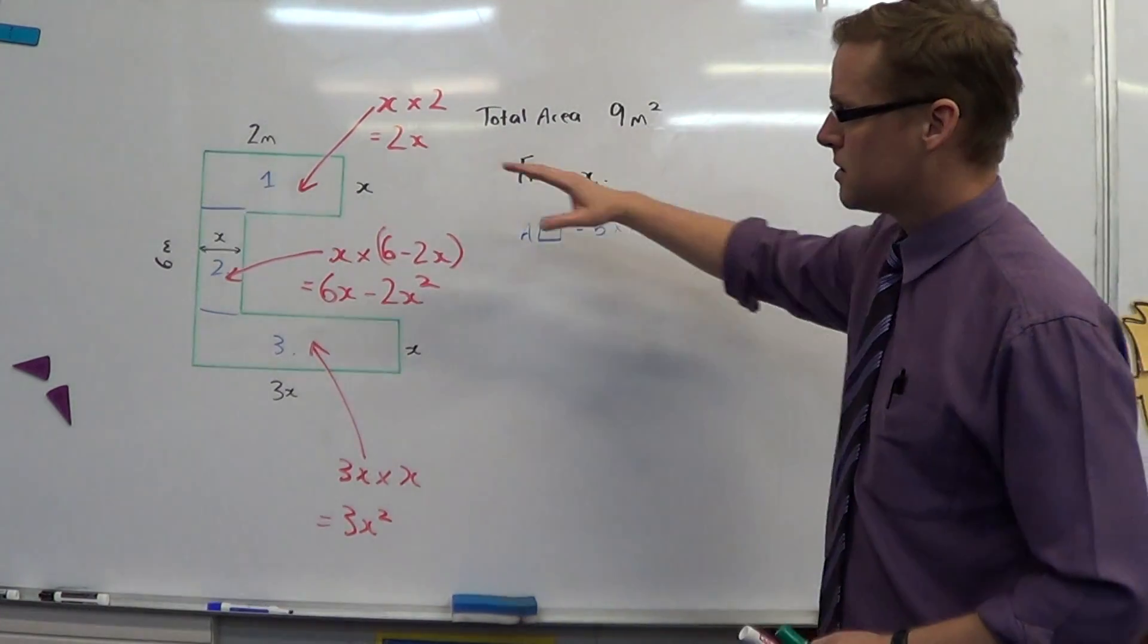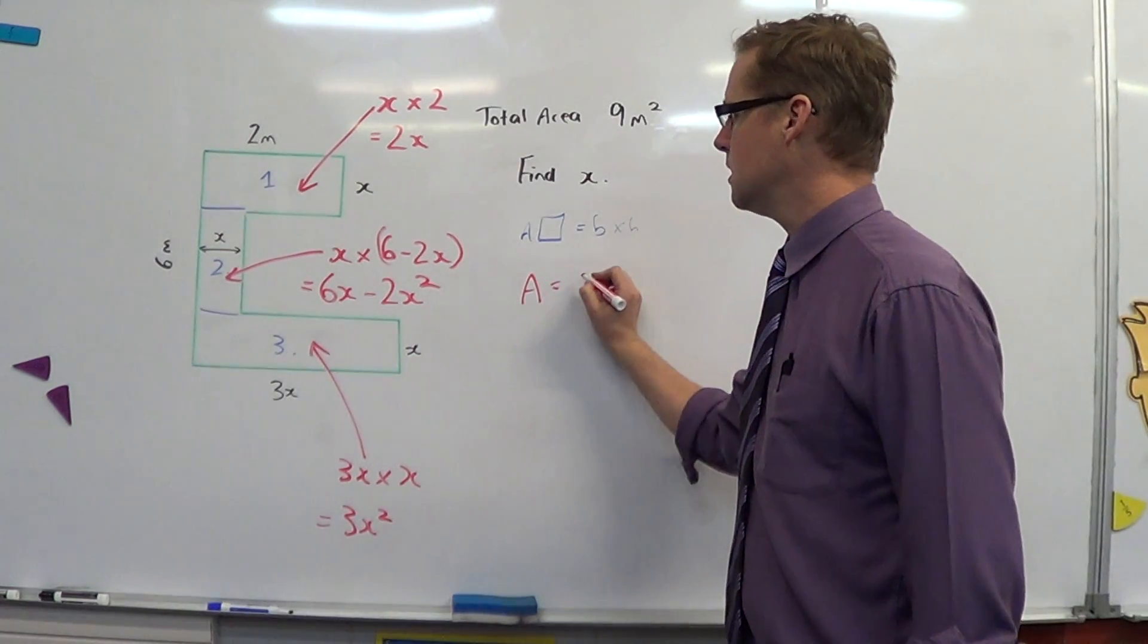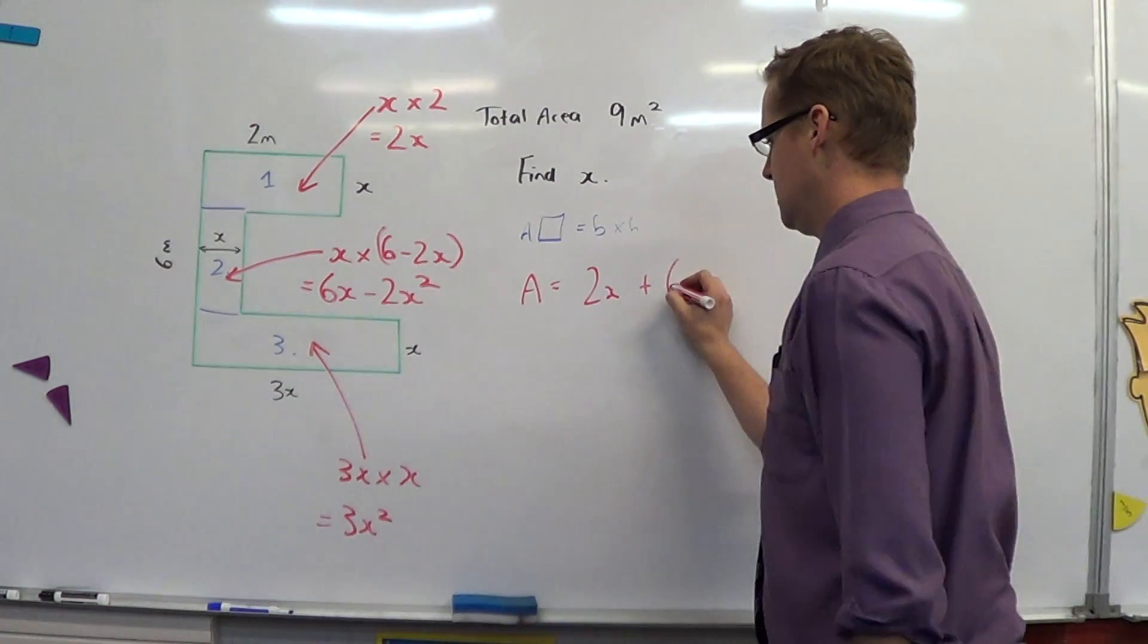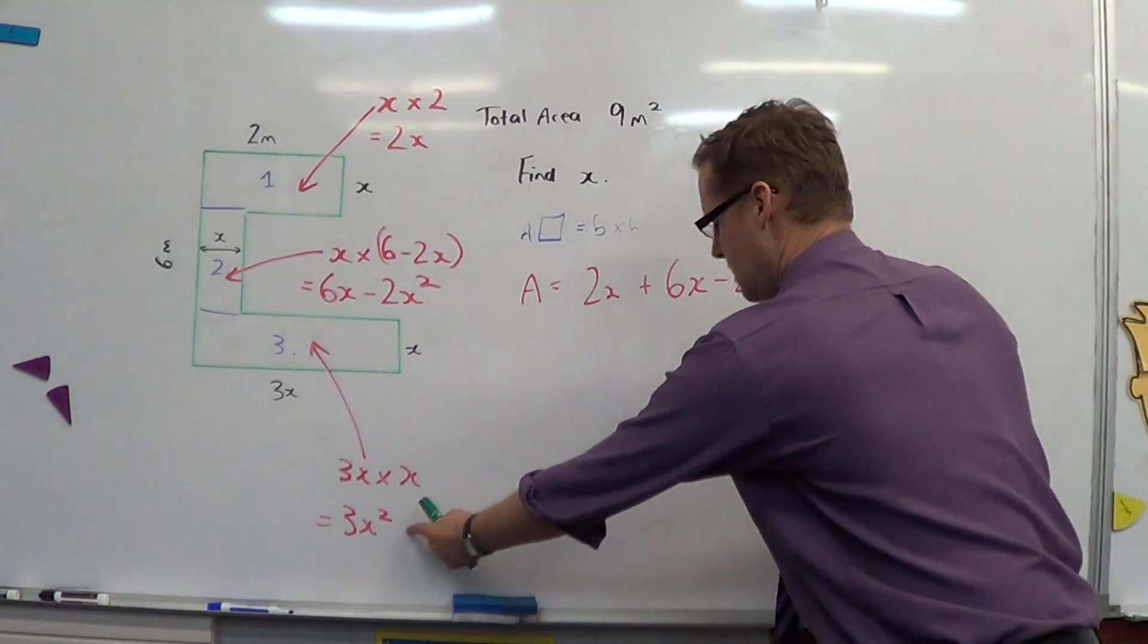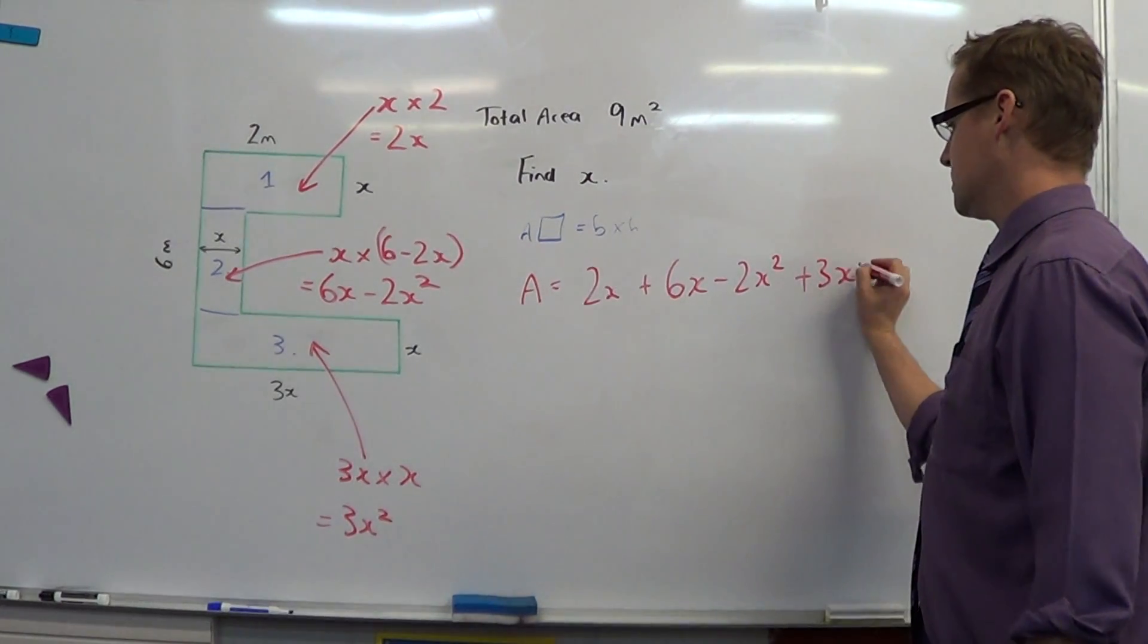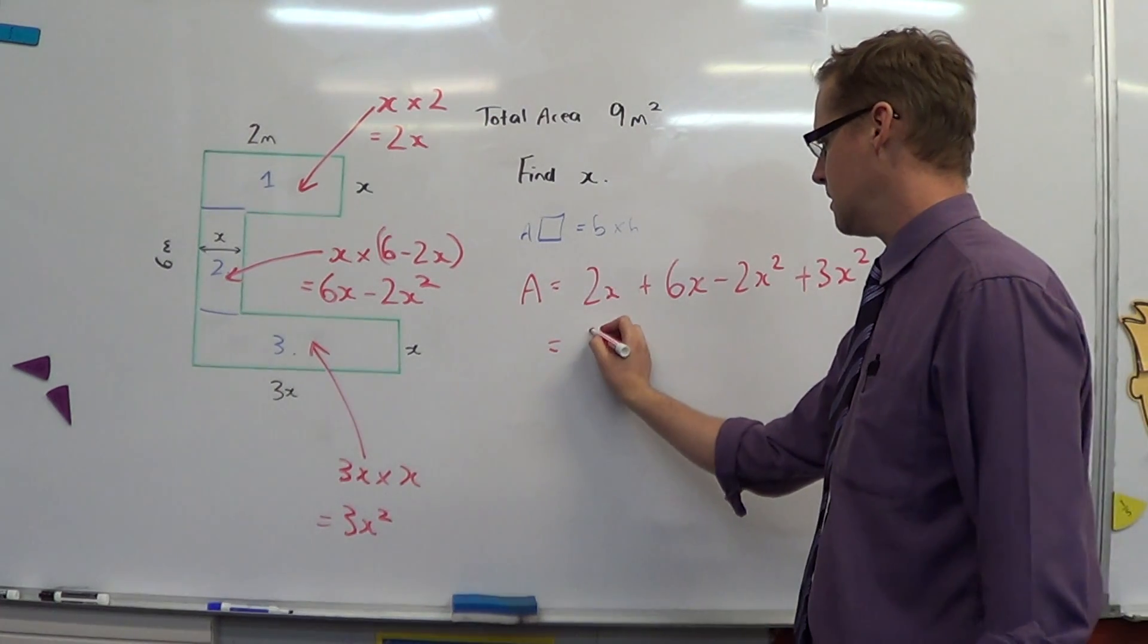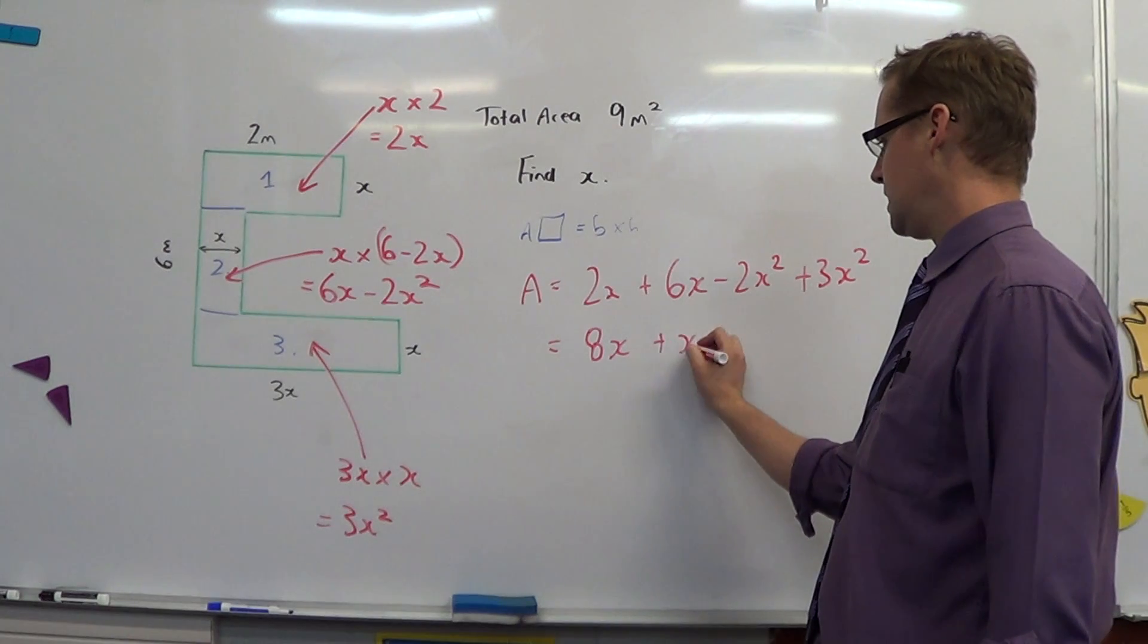The total area is the three rectangles. So the three rectangles are 2x plus 6x minus 2x squared and 3x squared. This is 8x plus x squared.